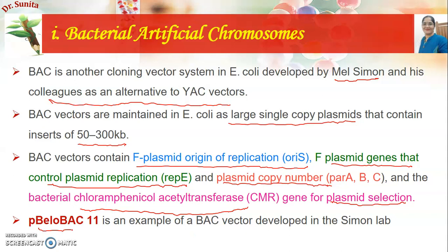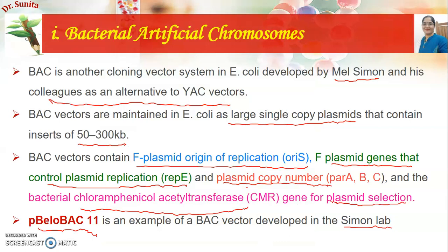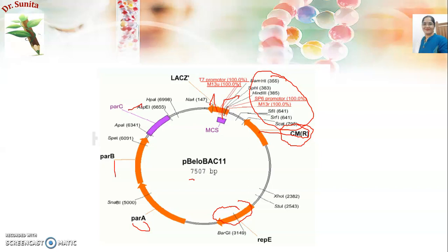An example of a BAC vector is pBeloBAC11, which was developed in the Simon lab. Its structure includes an origin of replication, the rapE3 gene that controls plasmid replication, par A, par B, and par C partition genes, the lac Z gene, and a chloramphenicol resistance gene (CMR) for plasmid selection. It also has a multiple cloning site for various restriction endonucleases. The size of pBeloBAC11 is 7,507 base pairs.